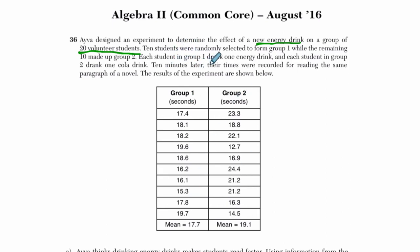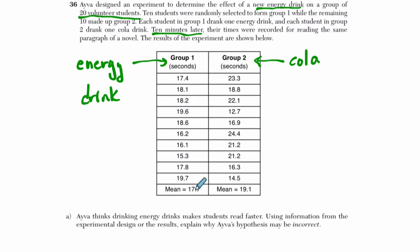Each student in group 1 drank one energy drink. So I'm going to label that so I don't confuse myself. This is the energy drink group. And what's the other group doing? And each student in group 2 drank one cola drink. All right, so this is my cola drink. 10 minutes later, 10 minutes later it passes, and what happens?